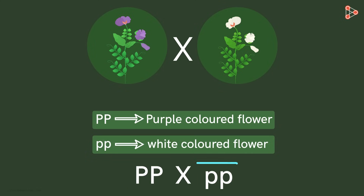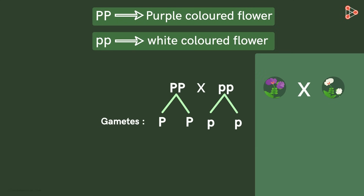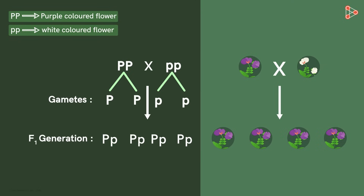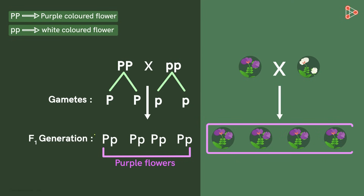In this cross, the gametes — which are nothing but the reproductive cells — will be formed, and the cross will yield four possible combinations. PP indicates that the offspring has one dominant and one recessive allele. In such a case, the plants will have only purple flowers, as the presence of one dominant gene is enough to express the trait. That is why all the plants have purple coloured flowers in the F1 generation.